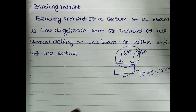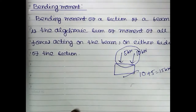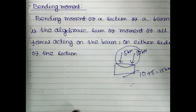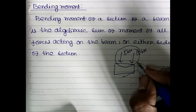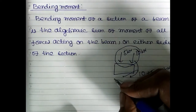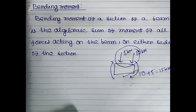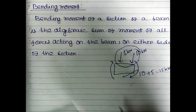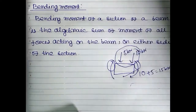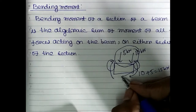What is bending moment? Bending moment is nothing but the algebraic sum of moments of all the forces acting on the beam on either side of the section. So if one moment is acting here and another moment is acting here, the bending moment will be the algebraic sum of both moments for that section of the beam.